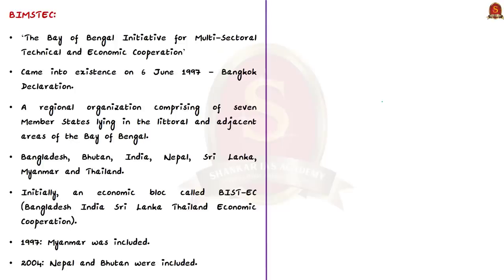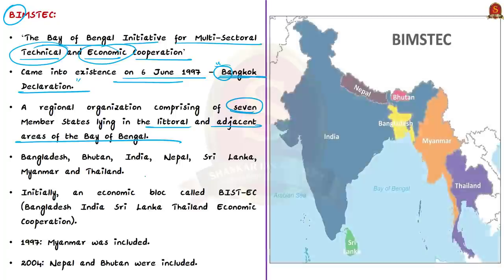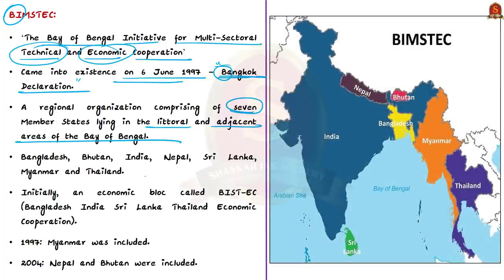BIMSTEC stands for the Bay of Bengal Initiative for Multi-Sectoral Technical and Economic Cooperation. The organization came into existence on 6th June 1997 through the Bangkok Declaration. BIMSTEC is a regional organization comprising seven member states in the littoral and adjacent areas of the Bay of Bengal — countries lying around the Bay of Bengal area.